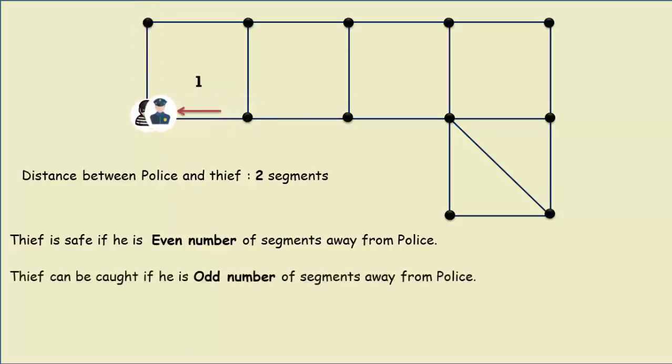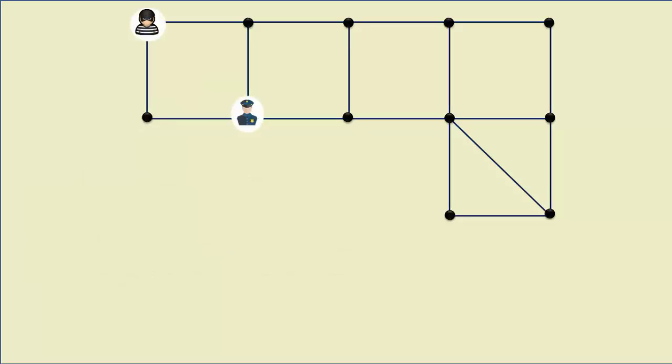So we have analyzed the pattern of movements. Now it's time to observe any irregular objects. As you can see, there is an extra diagonal here. So it may have some purpose behind it.